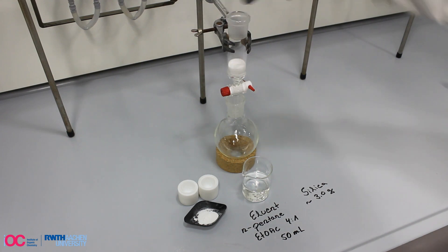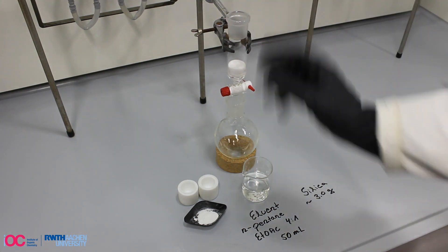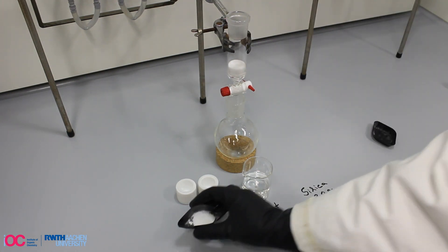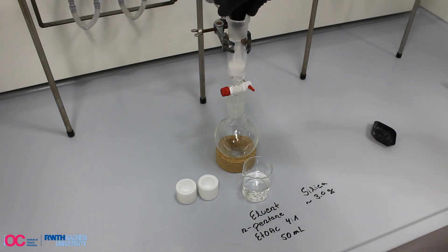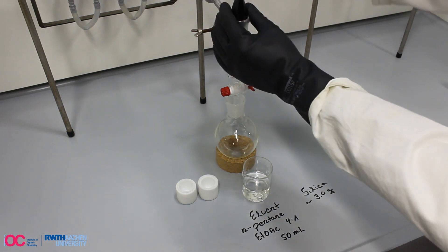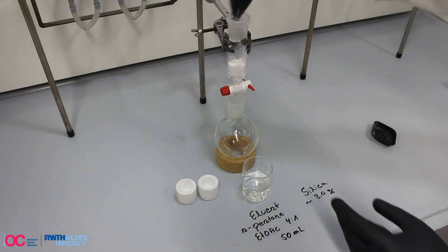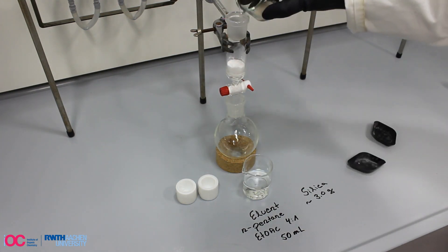The purification of the desired sulfonyl fluoride can be achieved by simple silica plug filtration. First, 3 grams of silica are added to the column, followed by the crude mixture obtained after the milling process and a small layer of sand.